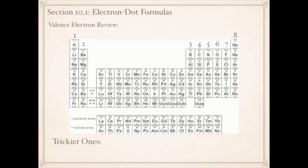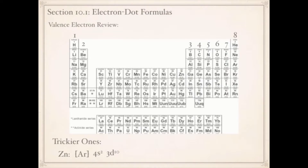However, what happens if you have a trickier one? For example, what if you have a transition metal? Let's look at zinc. I'm going to quickly write out the shorthand electron configuration for zinc. To write the shorthand electron configuration, you move up a row across to the noble gas, which would be argon, and put that in brackets. Then you keep reading — so I go down to where potassium is: 4s2, then 3d10. Looking at this and remembering that valence electrons are the electrons in the outermost energy level, this tells me that zinc, because 4 is the highest energy level, has two valence electrons.